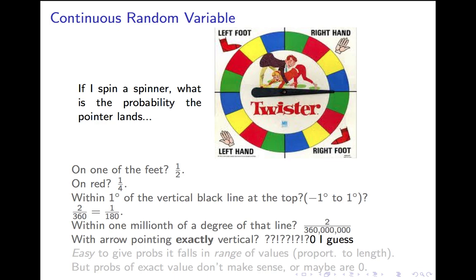But on the other hand, it can't be zero. Because if it's zero, every point on the circle has probability zero of being picked. And then how does any point ever get picked?